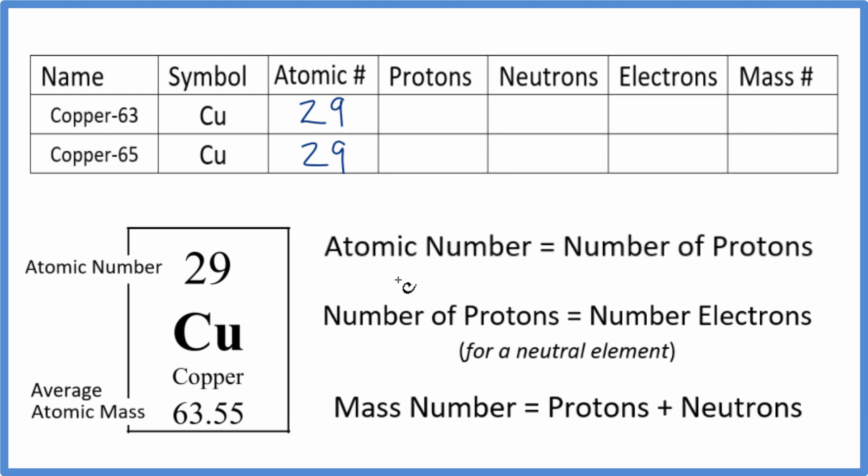If we know the atomic number for copper, we know the number of protons. So we have 29 protons, and that's for all isotopes of copper.